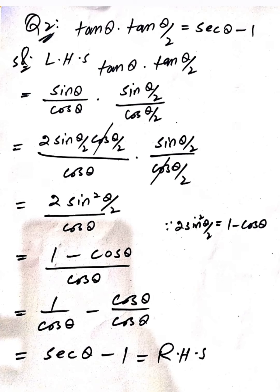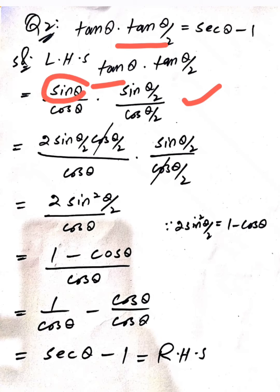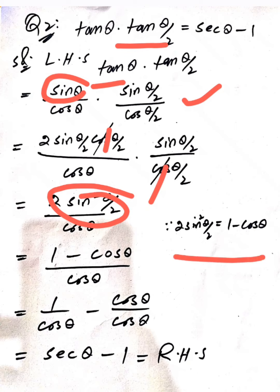The next question is that tan θ · tan(θ/2) = sec θ - 1. We take the left hand side. We put tan θ as sin θ / cos θ, and replace tan(θ/2) with sin(θ/2) / cos(θ/2). We then apply the formula sin θ = 2 sin(θ/2) cos(θ/2). Here, cos(θ/2) cancels, giving us 2 sin²(θ/2) / cos θ. We use the formula 2 sin²(θ/2) = 1 - cos θ.